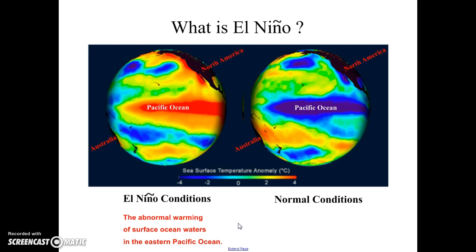El Nino happens periodically. Scientists are still studying it to learn how frequently it occurs and what triggers it. To understand it, we have to take a closer look at that part of the Earth. We're dealing with the area of the Pacific Ocean near the equator.